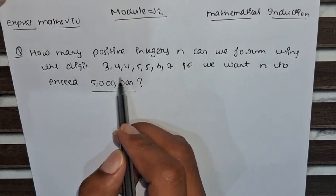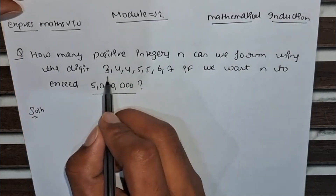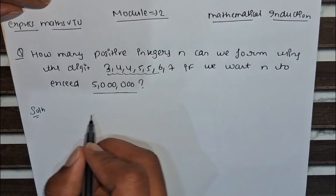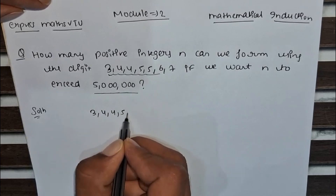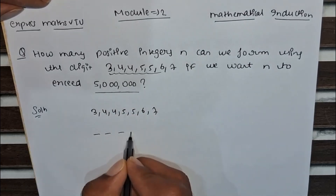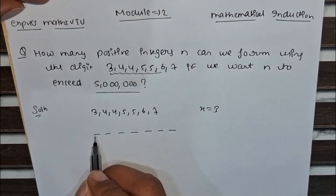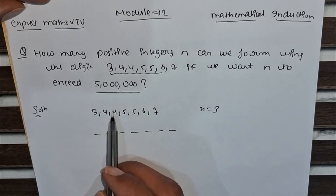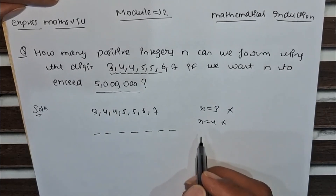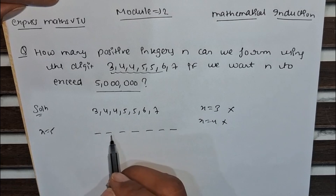We have to form positive integers using the given digits 3, 4, 4, 5, 5, 6, 7 — that's 7 digits total — such that the number exceeds 50 lakh. If we take x equal to 3 in the leading position, the value is less than 50 lakh, so this is not possible. Similarly, if x equals 4, that is also not possible since it is also less than 50 lakh.